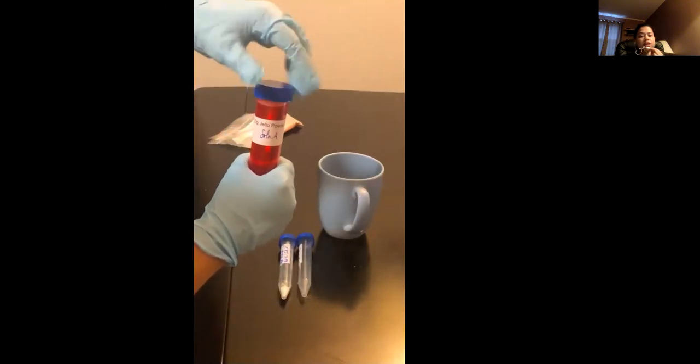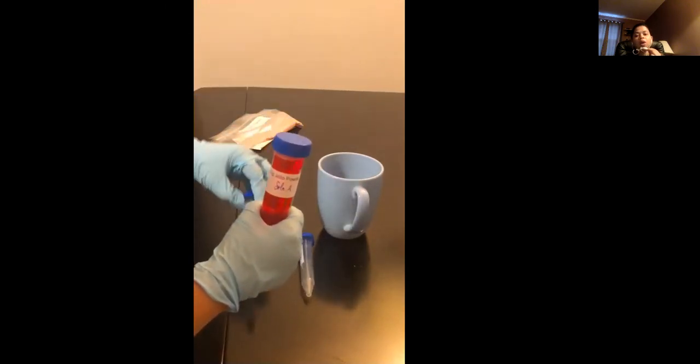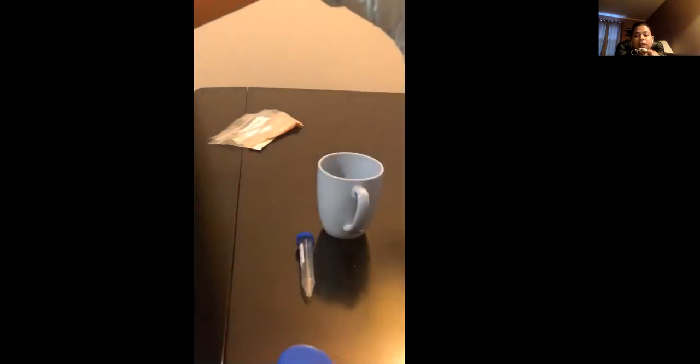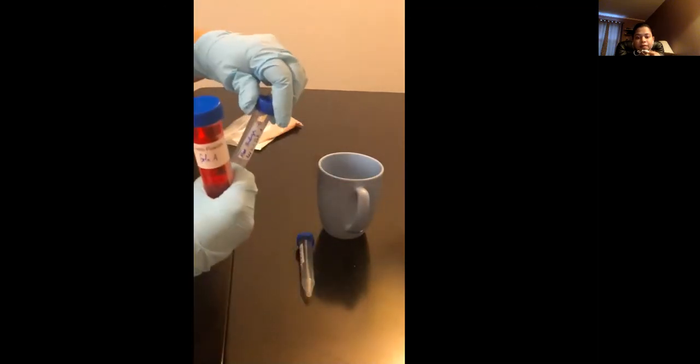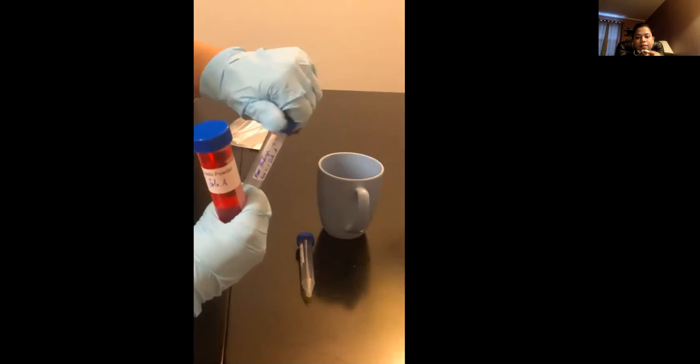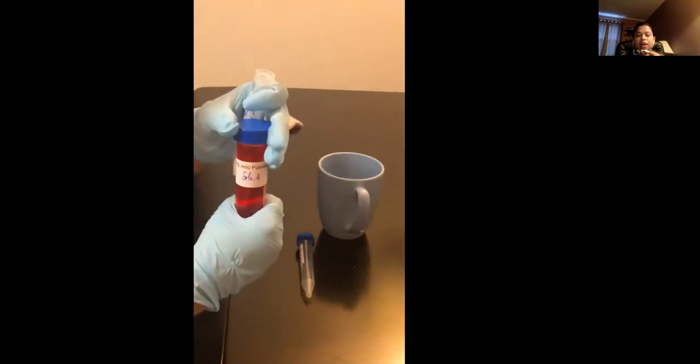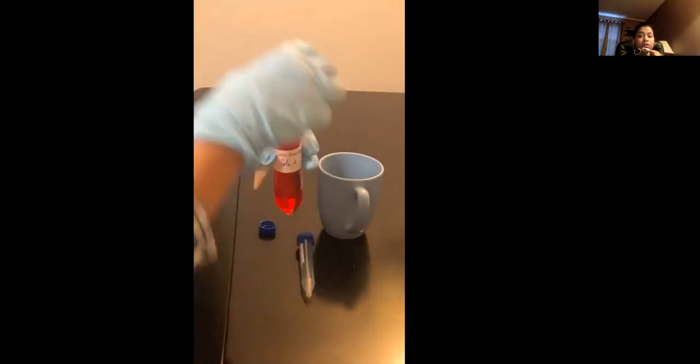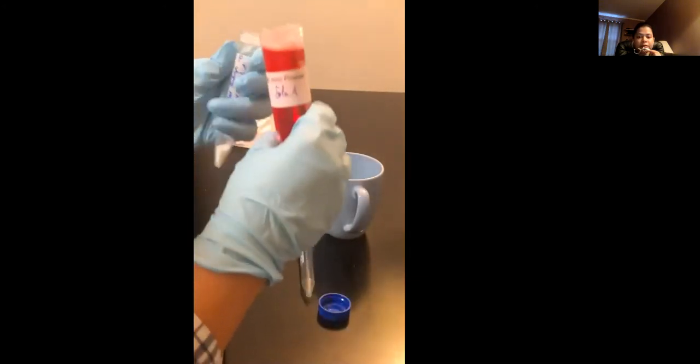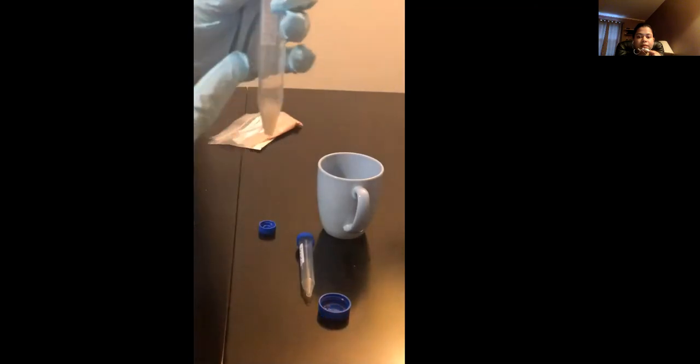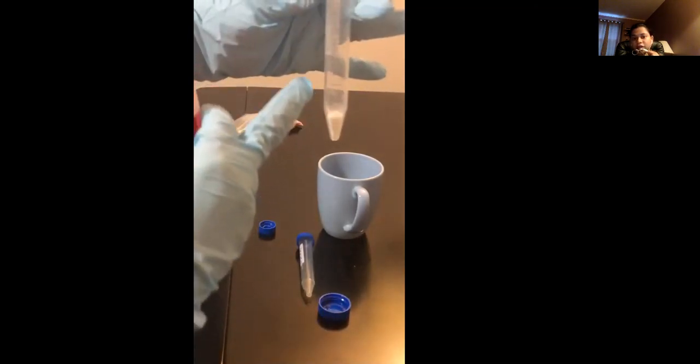Once it has cooled down to room temperature, we take the tube containing the meat tenderizer and add 5 ml of this jello powder water solution, which is called solution A, to the meat tenderizer tube.